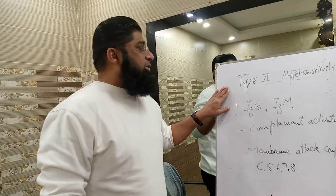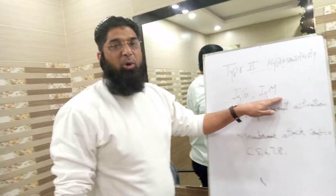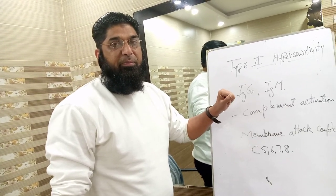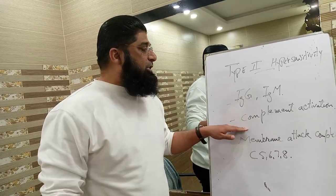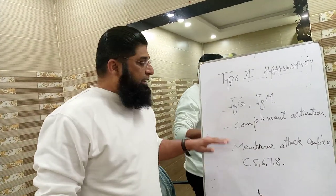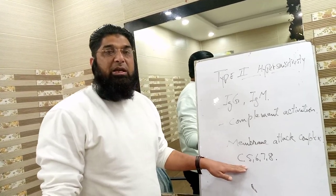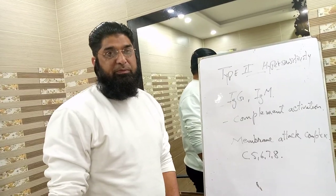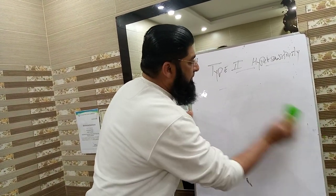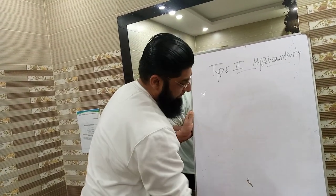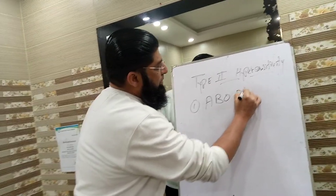The story of type 2 hypersensitivity starts when IgG or IgM antibodies are activated against the antigens present on the surface of cells. This leads to complement activation, and when there is complement activation, the membrane attack complex is formed, which then causes lysis and destruction of the cell surfaces.